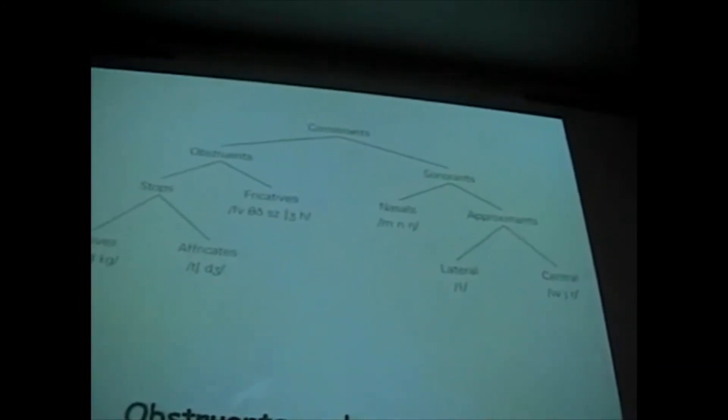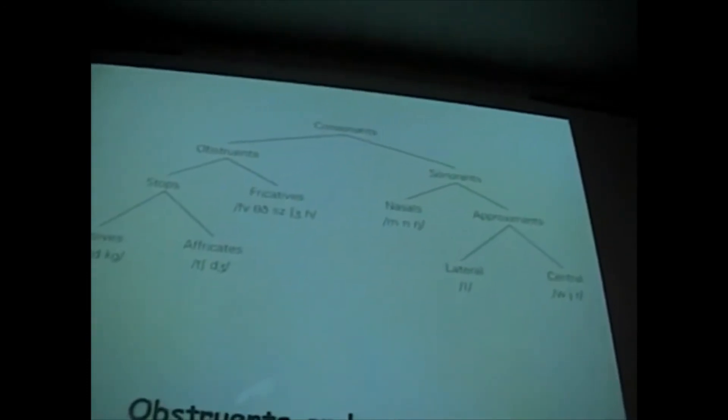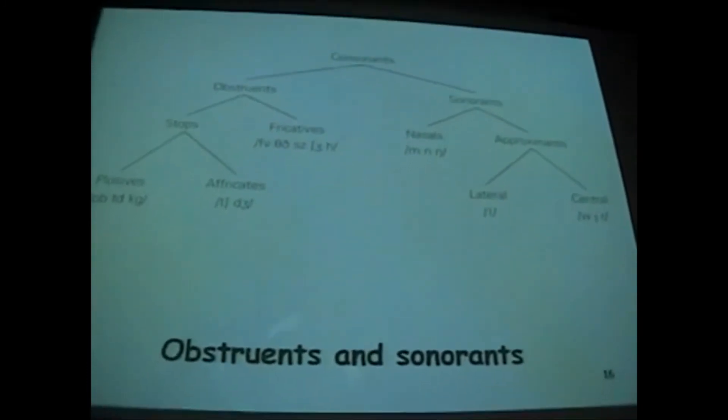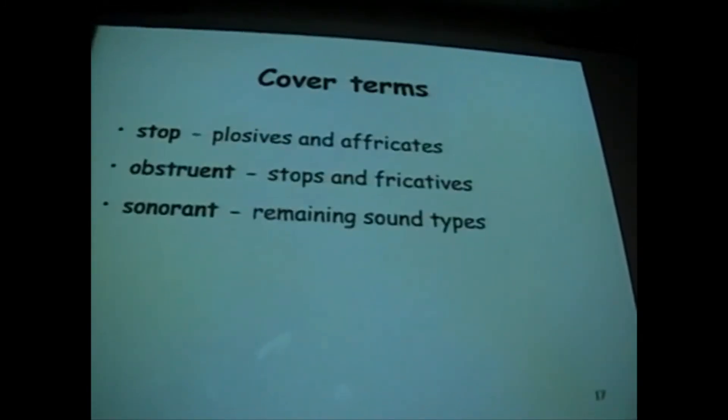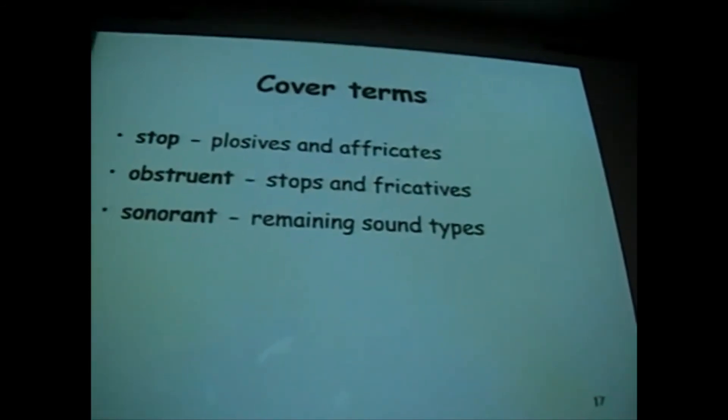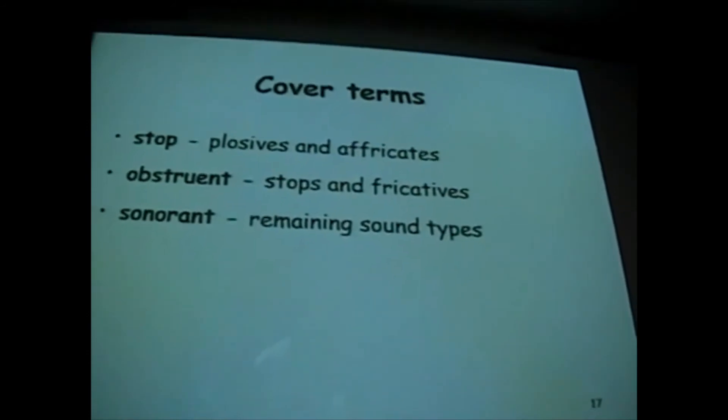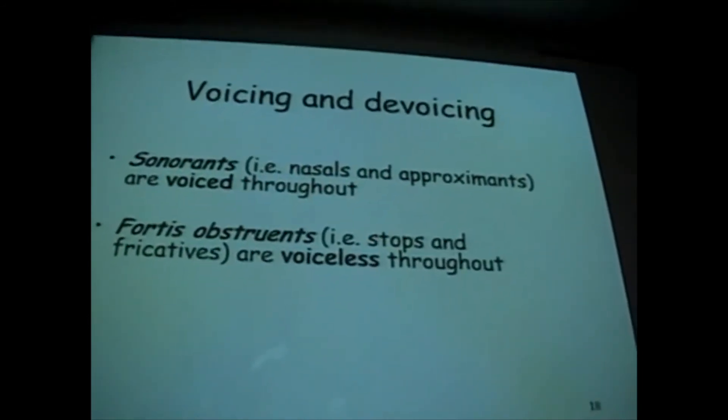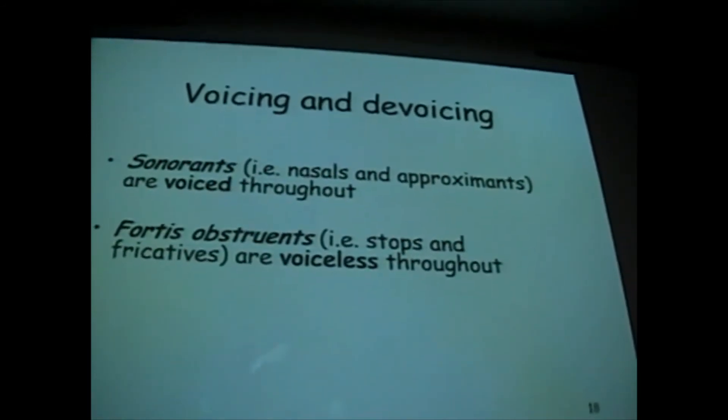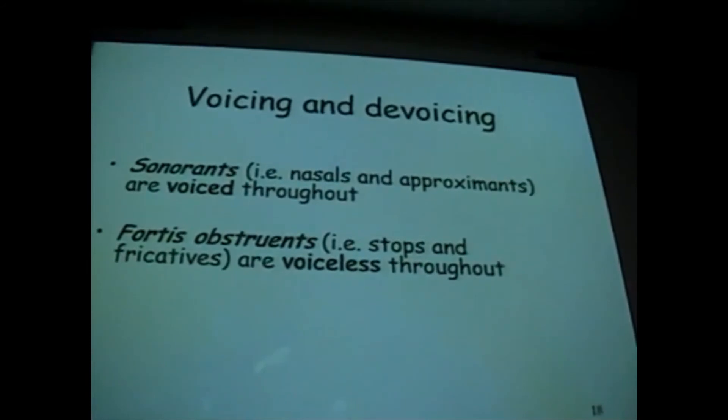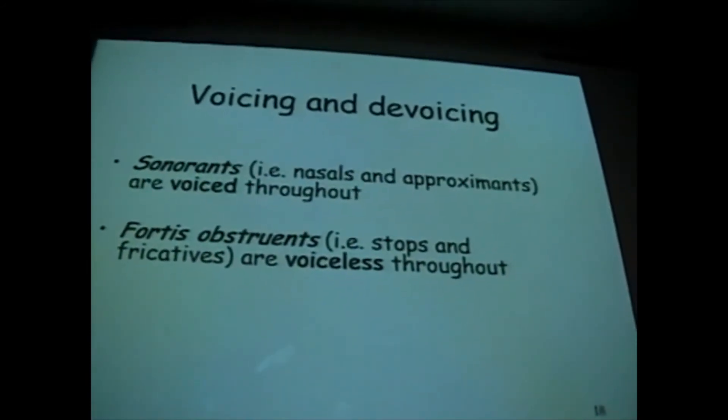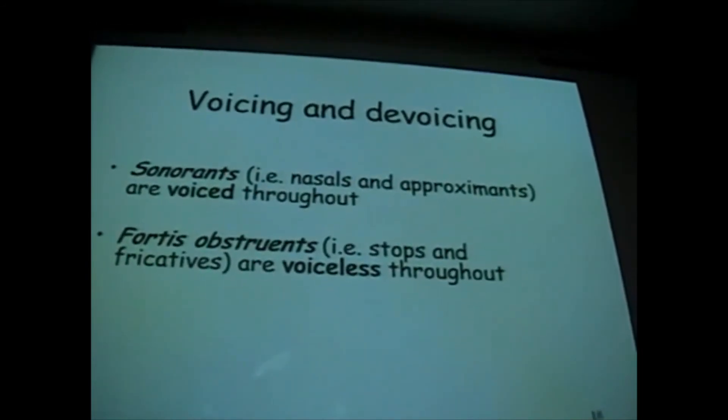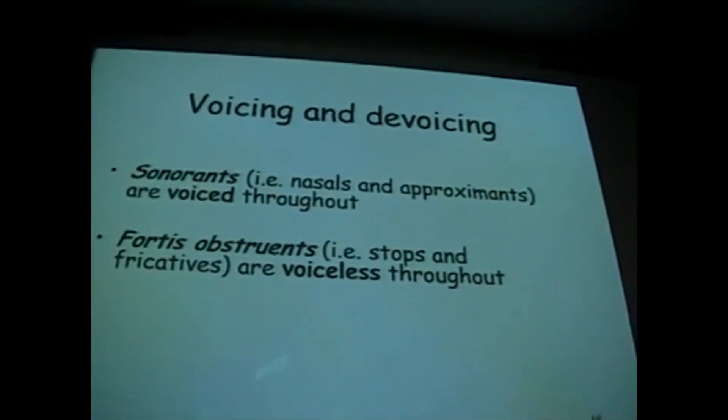And now I want to come back to the question of voicing. I promised you I would come back to this, because now I can make a few statements with extra terminology. You have terminology like obstruent and sonorant and so on. Sonorants, that's to say the nasals and the approximants, are voiced throughout. So you have the vocal folds buzzing all the way through the sound. If I say a word like man, my vocal folds are buzzing all the way through, fully voiced.